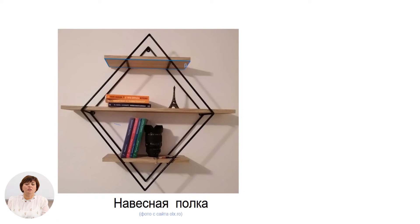Рассмотрим теперь навесную полку, в которой выделим плоскость β – нижнюю плоскость полки и плоскость α – на основе структуры этой полки. Выделим прямую пересечения этих двух плоскостей – прямую D. Итак, две плоскости могут пересекаться, и они пересекаются по прямой.